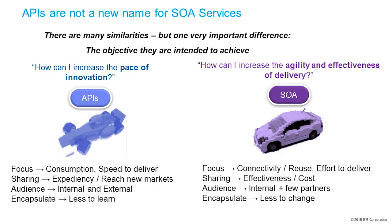Let's take a look at some of the things that are different. In the SOA world, the focus was on connectivity and reuse. We were building services to drive reuse — a single view of a customer, a single view of an account, a single view of an order. Anyone who wanted information about that asset would come and reuse that service, typically inside the enterprise, dealing with systems of record. The sharing was about effectiveness and cost — reducing the cost of future projects. Most of the audience was internal, and making services available to partners was difficult, requiring security setup and training. The encapsulation aspect was about reducing change cost.